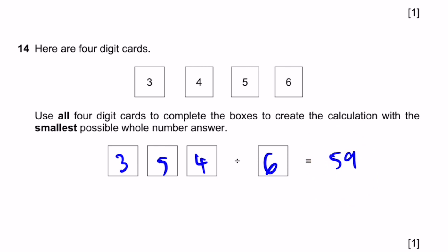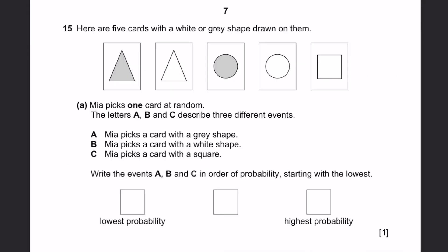Now, going to question 15. Here are five cards with a white or grey shape drawn on them. A. Mia picks one card at random. The letters A, B, and C describe three different events. A. Mia picks a card with a grey shape. B. Mia picks it with a white shape. C. Mia picks it with a square. Write the events A, B, and C in order of probability, starting with the lowest.